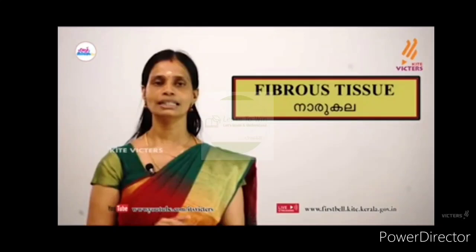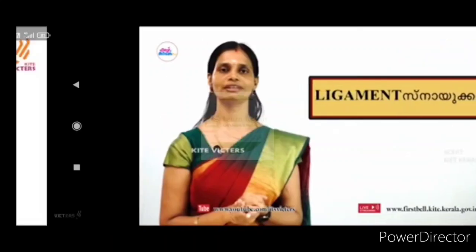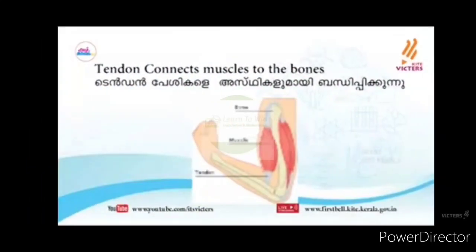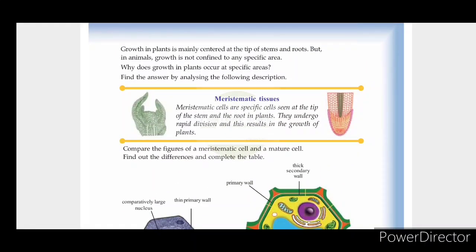Fibrous tissue includes ligaments. A ligament connects bone to bone. It holds bones together at joints. Ligaments can be broken or injured, which affects joint stability.